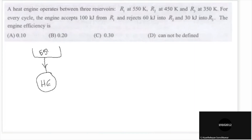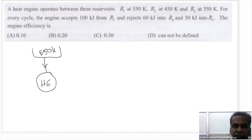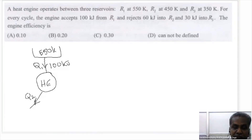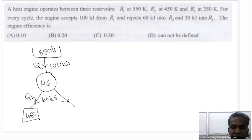The engine efficiency is to be found. The engine receives 100 kilojoules — let this be Q1 — from the reservoir at 550 Kelvin. It rejects 60 kilojoules to reservoir R2 — let this be Q2 — at 450 Kelvin. The third reservoir is at 350 Kelvin, and the engine rejects 30 kilojoules of heat to it.